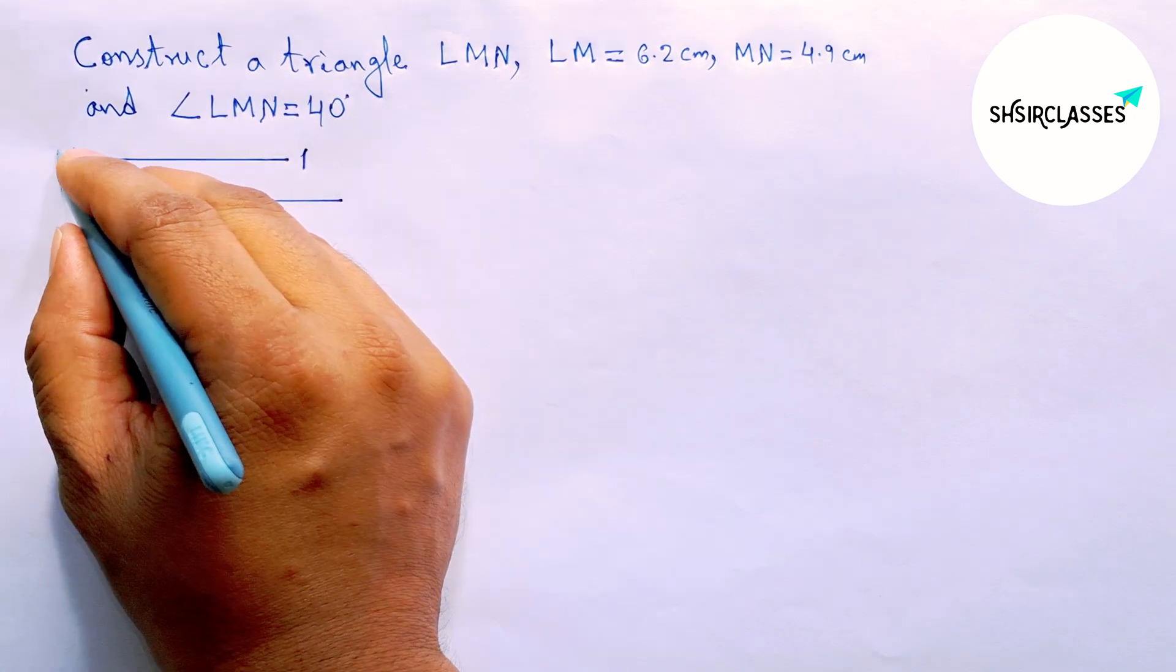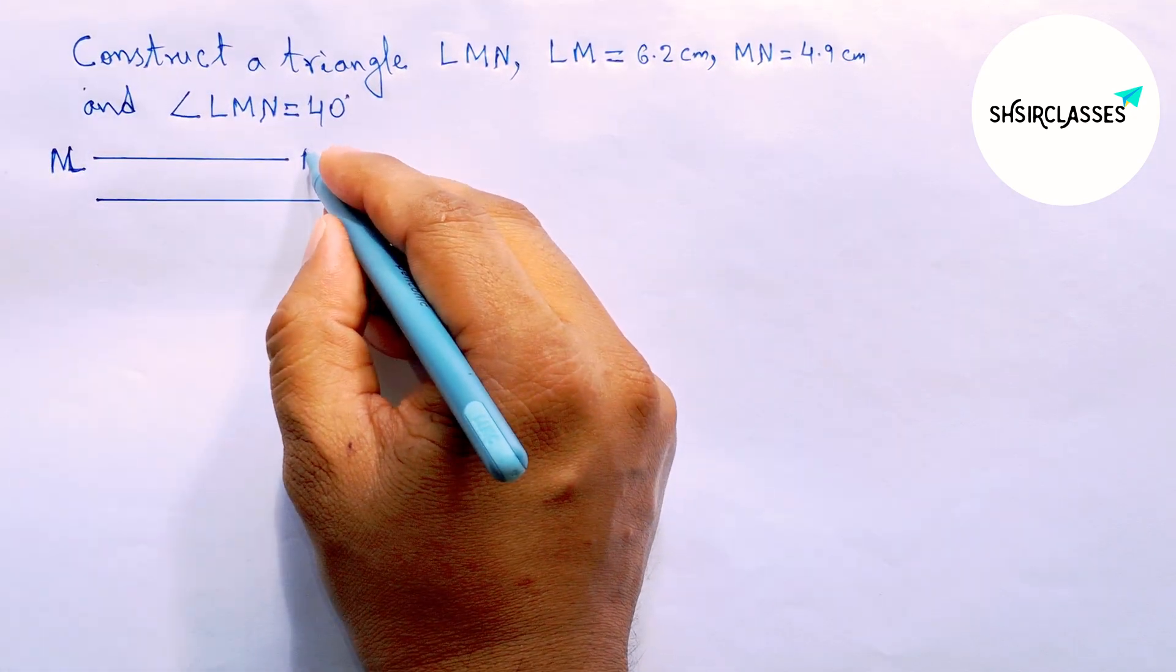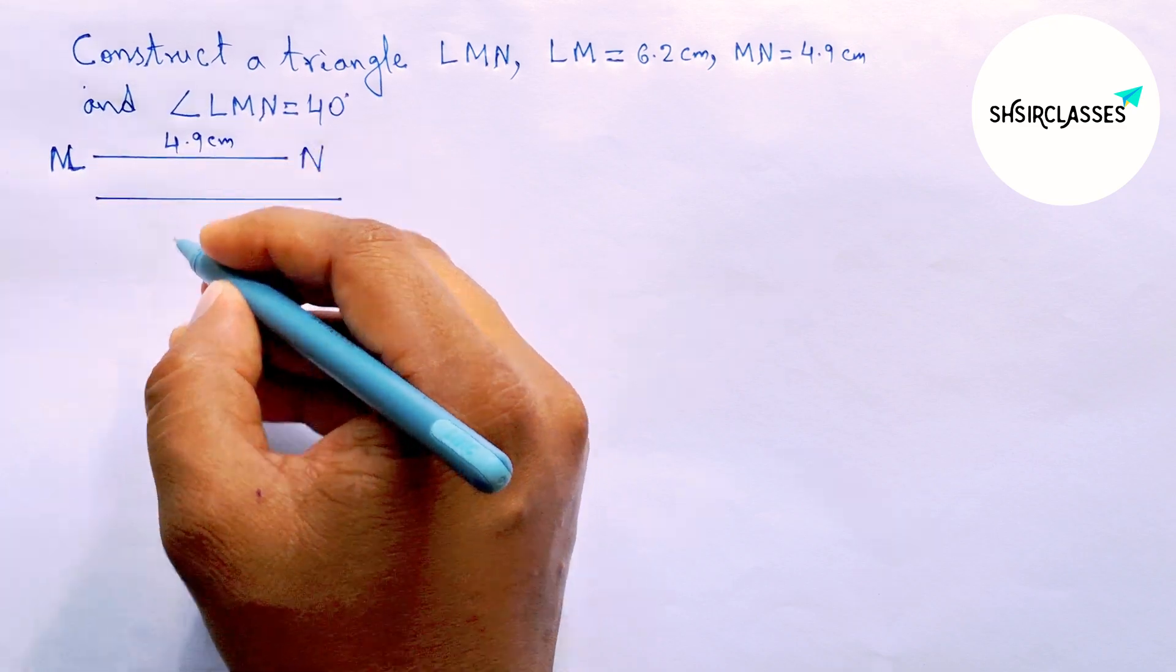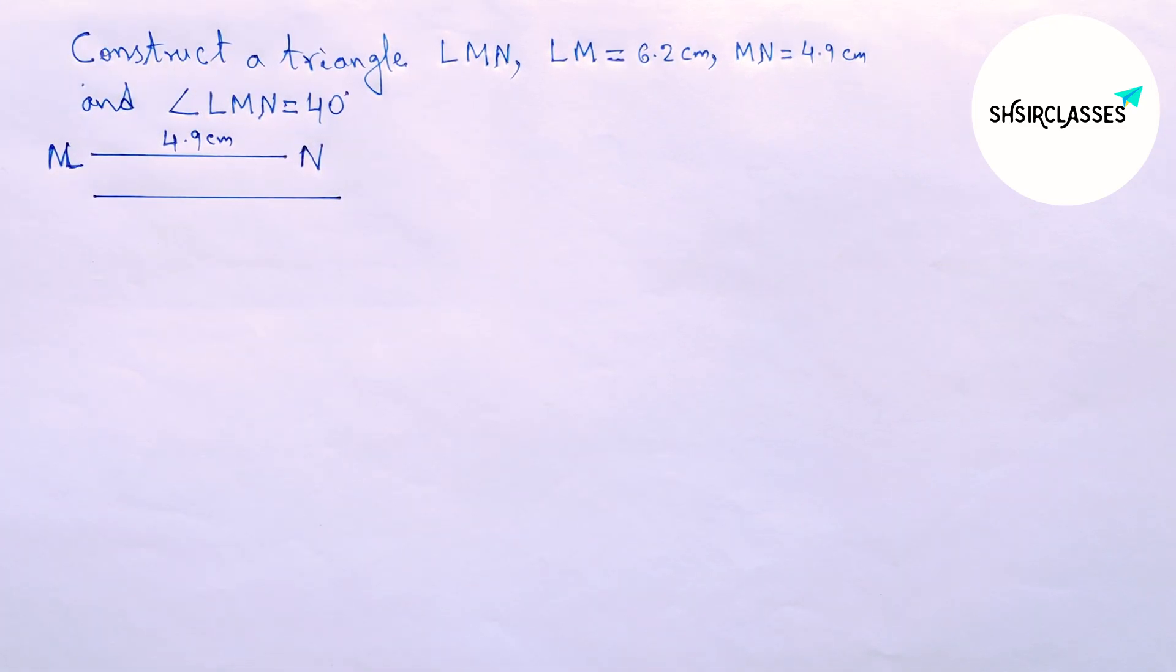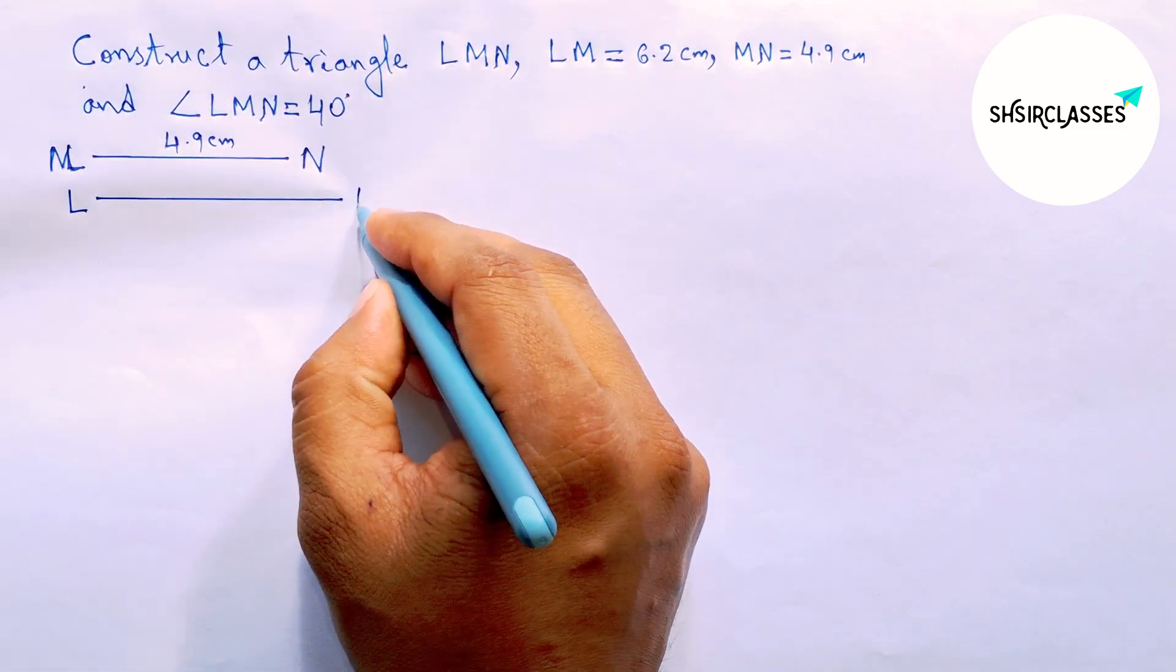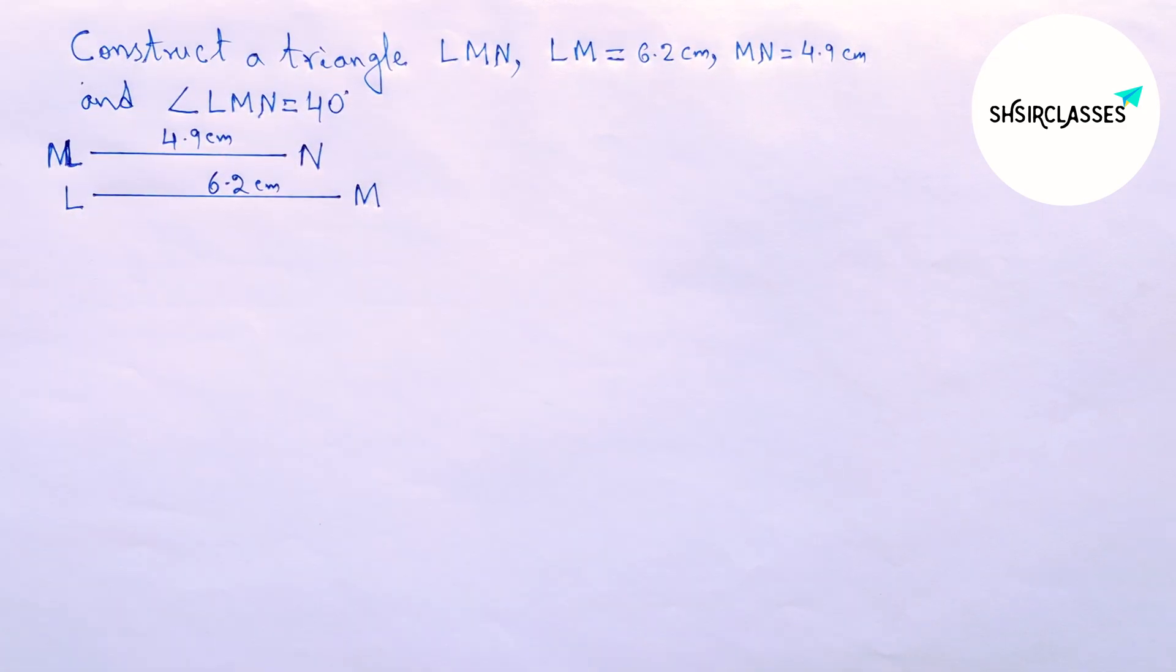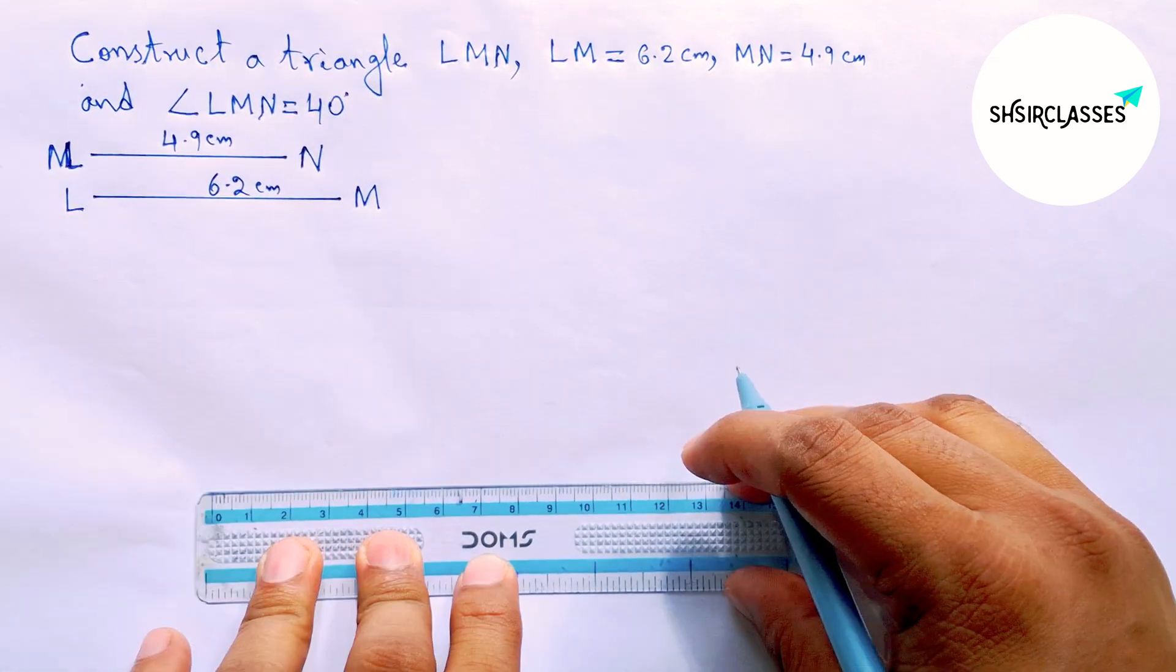Labeling here M and here N. So MN equals 4.9 centimeters and LM equals 6.2 centimeters.